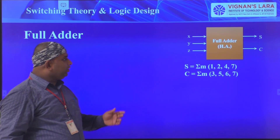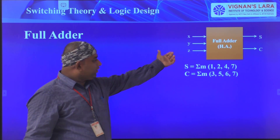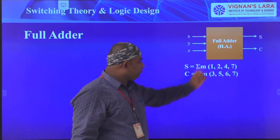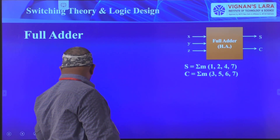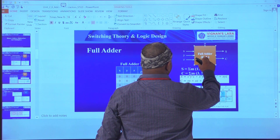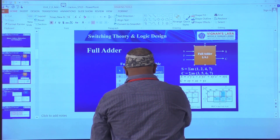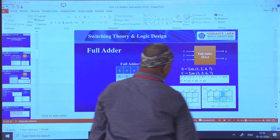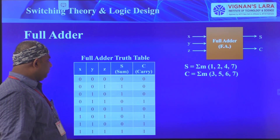We are taking three inputs: x, y, and z. This is the full adder, and we are generally representing it as FA.